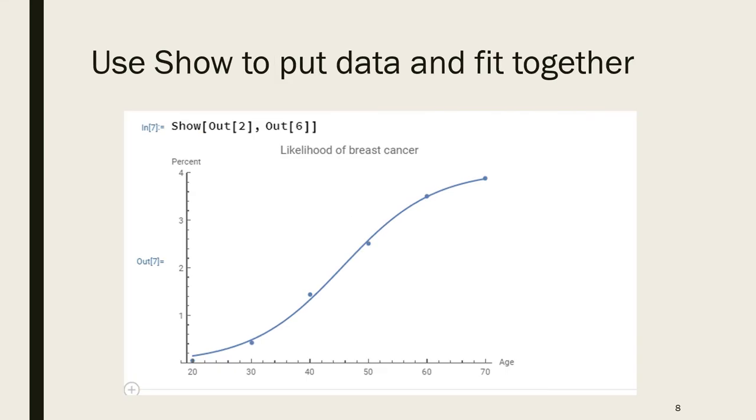Here we're using the Wolfram method show to put the two pieces together. Out 2 was the list plot. Out 6 was the plot of the fit function.